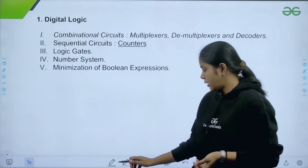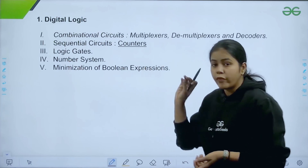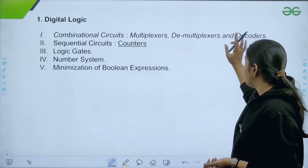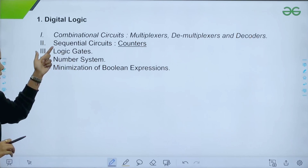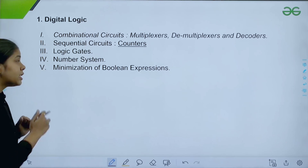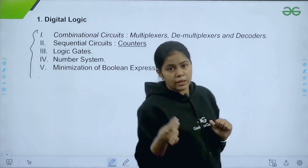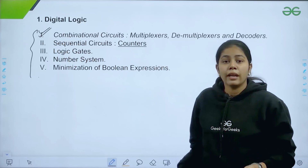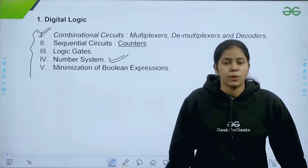Let's start with the subjects and their topics. The first subject is Digital Logic, and here we have five important topics: combinatorial circuits (which includes multiplexer, demultiplexer, and decoder), sequential circuits, logic gates, number systems, and minimization of boolean expressions. Out of these five topics, the most weightage topic is combinatorial circuits.